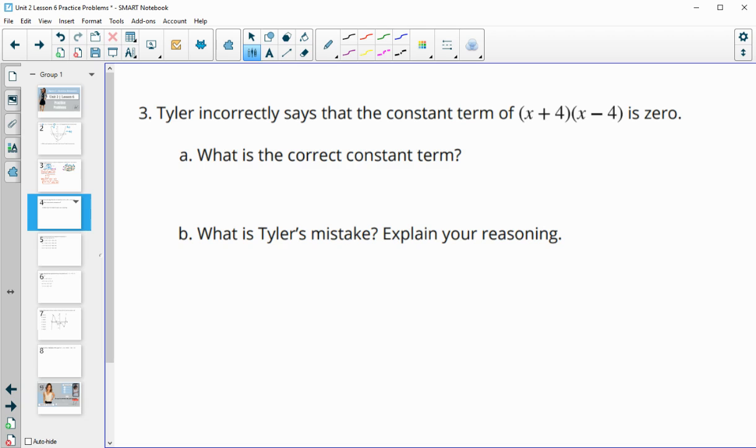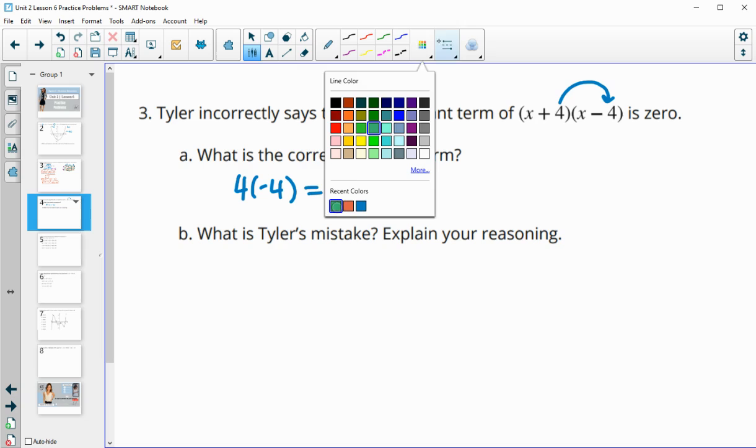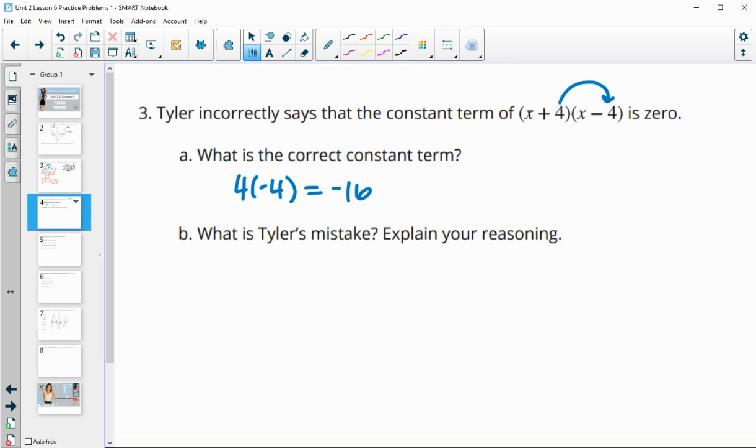Number 3, Tyler incorrectly says that the constant term of x plus 4 times x minus 4 is 0. What is the correct constant term? So the constant term is going to come when we multiply the two constants together. So 4 times negative 4 is going to give us our constant term of negative 16, not adding them. And the 0 is actually going to come from adding together our middle terms. Those like terms are going to come when we do x times negative 4 and get negative 4x, and then 4 times x, which is plus 4x. So that's where we're going to get that 0.